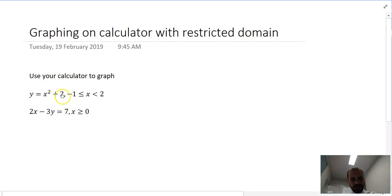y equals x squared plus 2, but we only want it where x is between negative 1, less than or equal to, or less than 2.